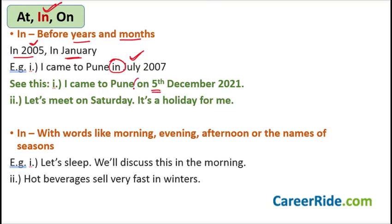But read this sentence: 'I came to Pune on 5th December 2021.' I'm not directly writing the month — I'm first writing a date, which is 5th December — that is why 'on' here. Similarly, 'Let's meet on Saturday' — I'm talking about a day, it's neither a year nor a month, that's why I'm using 'on.' And as we discussed, before words like morning, evening, afternoon, we use the preposition 'in.'